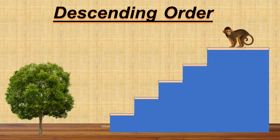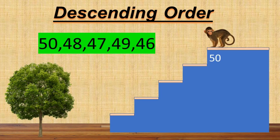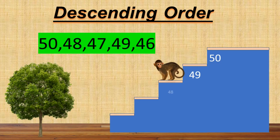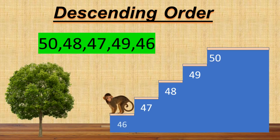Kids, look at that — Mr. Bingo is again on the top. Let's help him one more time. With all your help, he gets back home by arranging these numbers in descending order. Among these numbers, which number will come first? Yes, the greatest number, 50. Next number will be 49. Next is 48, followed by 47. And lastly, 46. Finally, Mr. Bingo gets down to go back to his home.